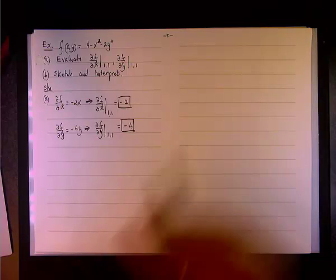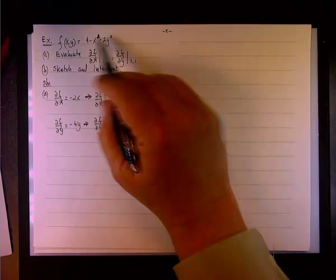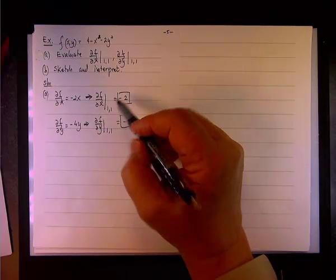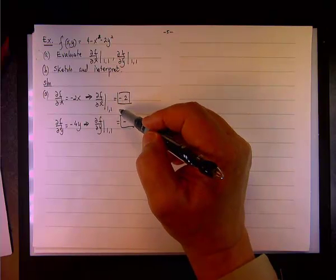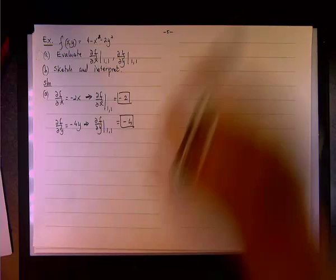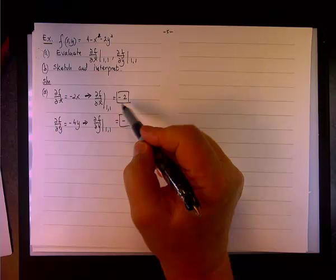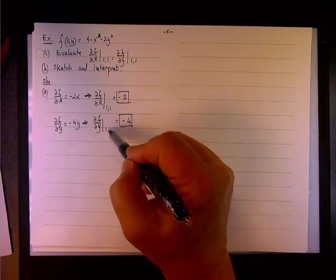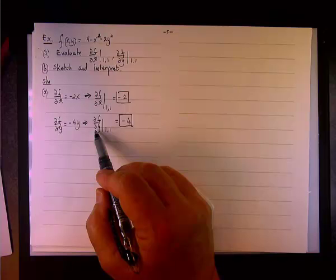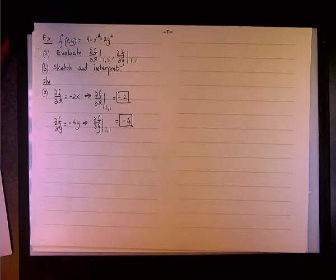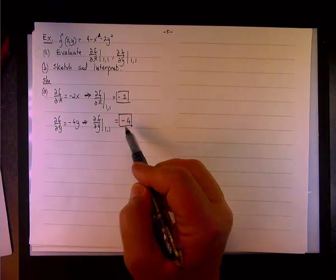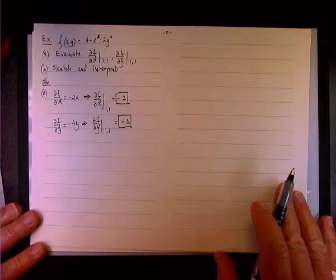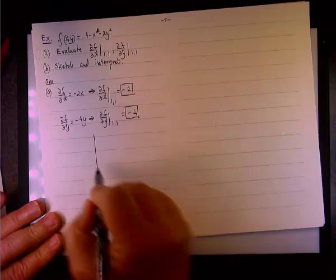So what does it mean? It means that if you approach this particular point (1,1) on this particular surface in a direction while holding y as a fixed value, in this case y equals 1, and vary x. In other words, you approach in a direction parallel to the x-axis, then you go down by a rate of change that is negative 2. So the slope of that particular tangent will be negative 2. Likewise, if you hold x equals 1 and you approach the point (1,1) along a tangent that is parallel to the y-axis, then the rate of change is negative 4. In other words, you have a steeper slope at that point.